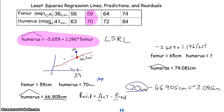If we had a negative residual, the actual value would be below the least squared regression line. A point below the line represents a negative residual. And the closer a point is to the line, the smaller — close to zero — the residual value will be, meaning our least squared regression line very closely predicted the actual value.